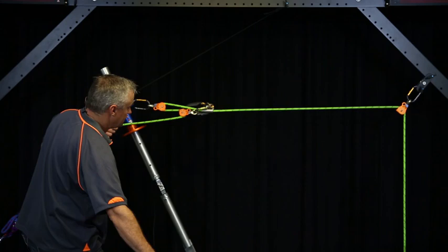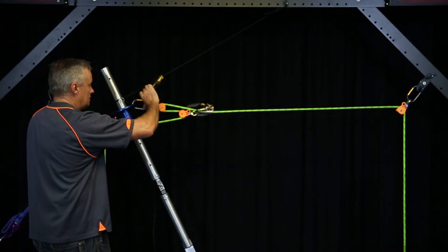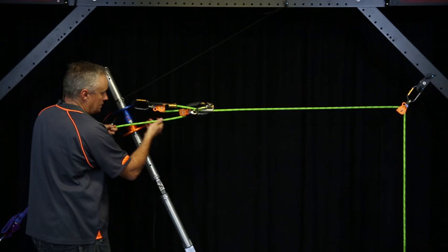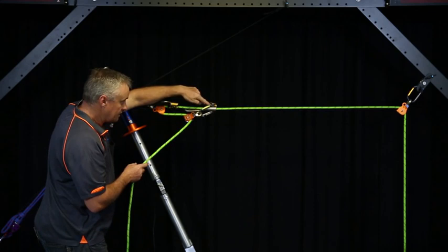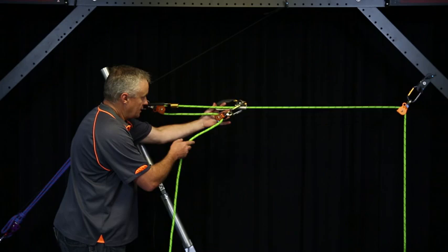So we need to have some ability to grab that rope to allow us to reset our pulley system. So I've attached a second device onto the line directly behind this grab. And that will allow us to push this grab forwards.